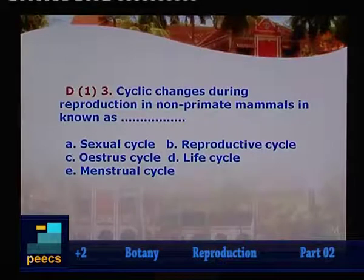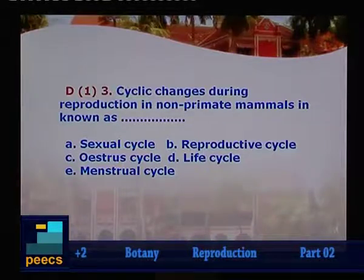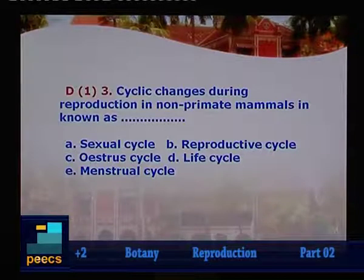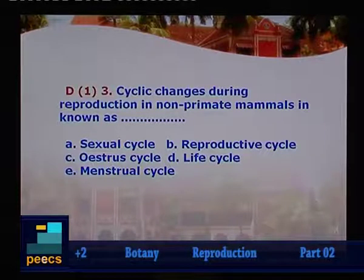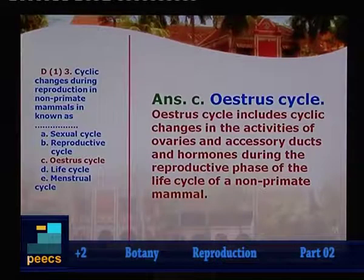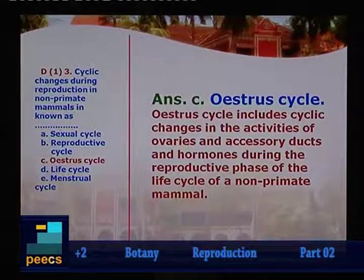Question 3: Cyclic changes during reproduction in non-primate mammals is known as — Option A: sexual cycle, B: reproductive cycle, C: oestrus cycle, D: life cycle, E: menstrual cycle. The correct answer is the oestrus cycle — it includes cyclic changes in the activities of ovaries, accessory ducts, and hormones during the reproductive phase of non-primate mammals.